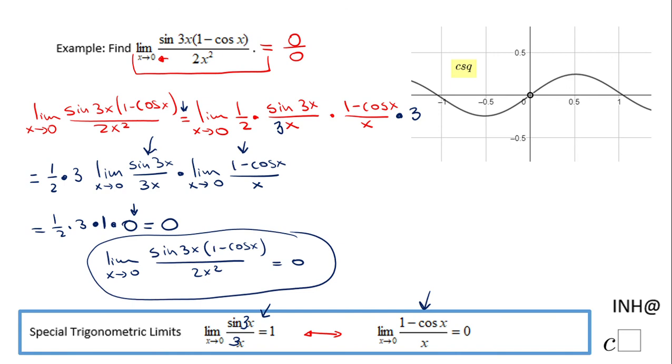You can see that also in this graph. Once we get closer to 0 from the left side or the right side, the function is getting closer to 0, so the limit is 0. The function is undefined at 0; you can see a hole there.